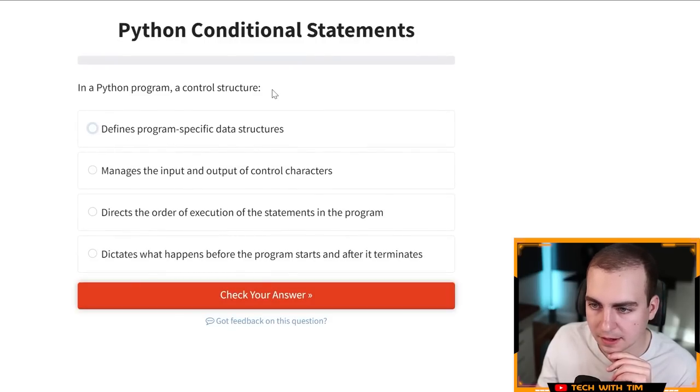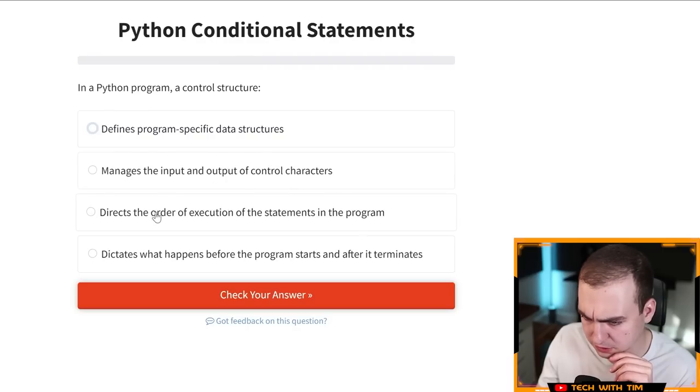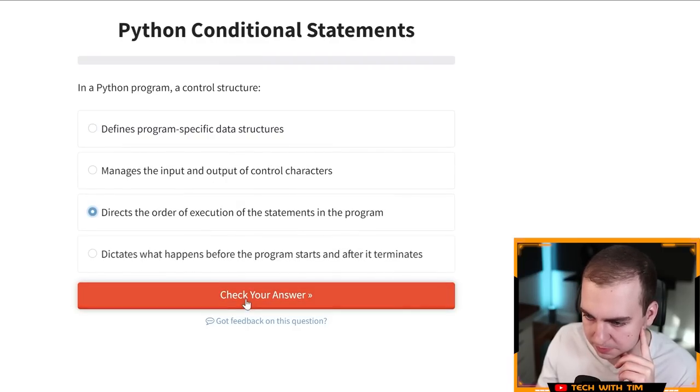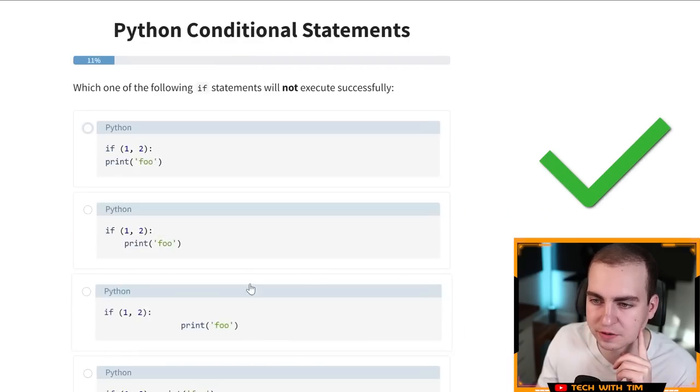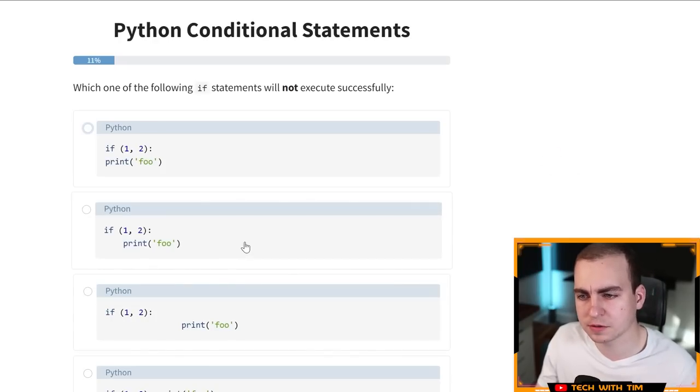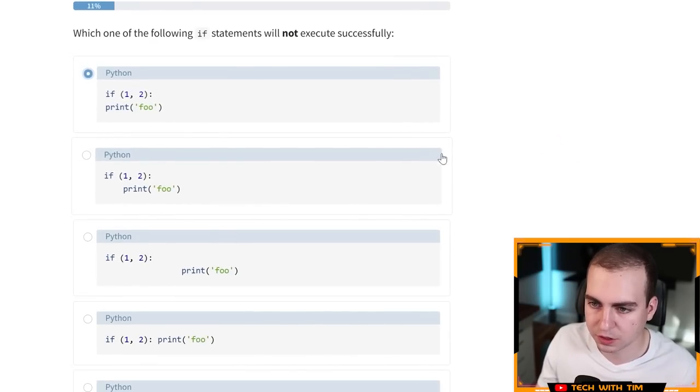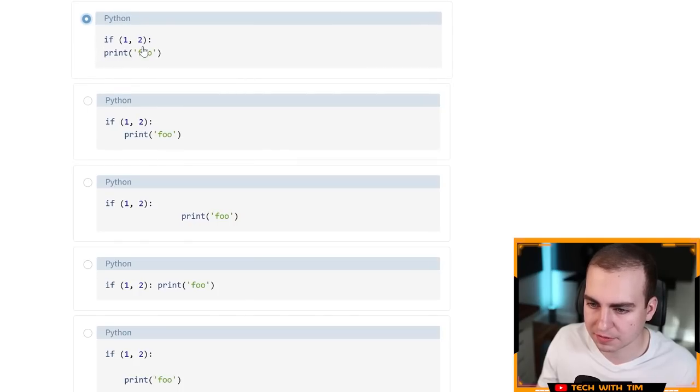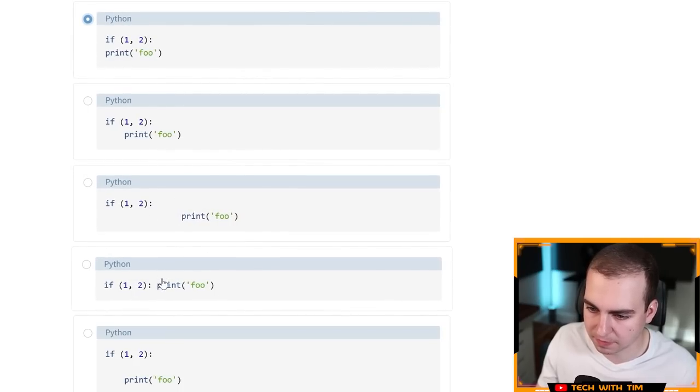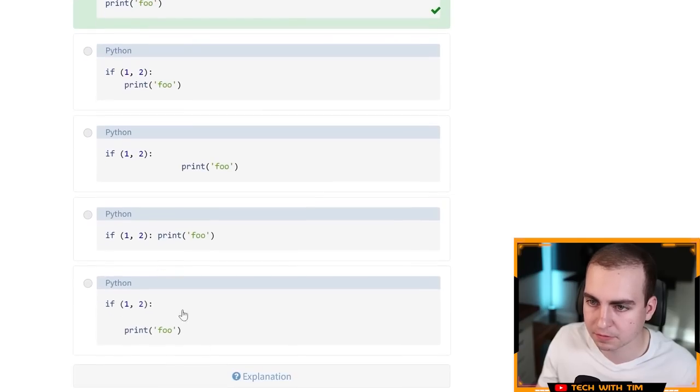Well, let's go through it in a Python program, a control structure defines a program specific data structure, manages the input and output of control characters, directs the order of execution, dictates what happens. Okay. Directs the order of execution. That one was an easier one. Which of the following if statements will not execute successfully? This will not execute because it does not have indentation. This might, that will work. That will work. That will work. Okay. So it's gotta be that one. Very good.